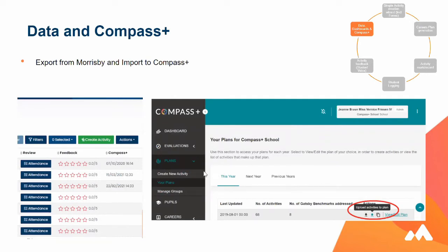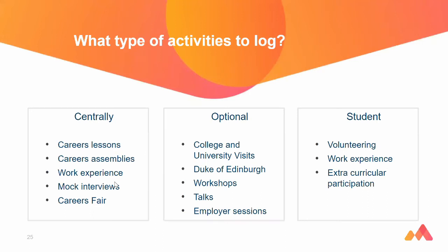A lot of schools are finding our system really easy to use. The types of activities you would log include centrally delivered ones like career lessons, career assemblies, work experience, mock interviews, and career fairs; optional things such as college and university visits, Duke of Edinburgh, workshops, talks, and employer sessions; and student-led activities like volunteering, work experience, and extracurricular participation.